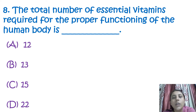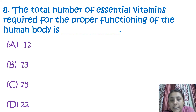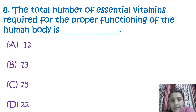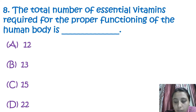The next question is: what is the total number of essential vitamins required for the proper functioning of the human body? We have fat-soluble vitamins like A, D, E, and K, and water-soluble vitamins like B and C. The essential vitamins required for health and development total 13 vitamins.